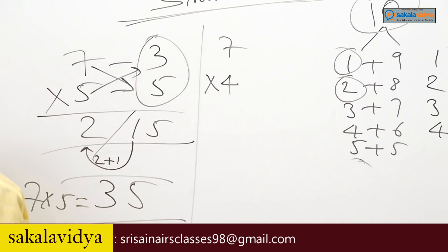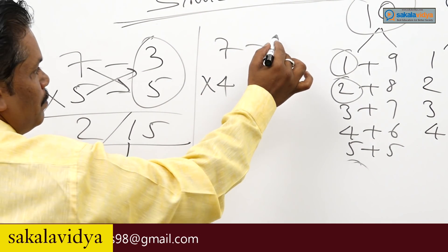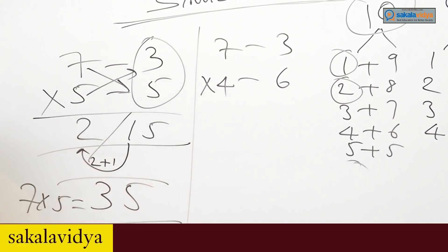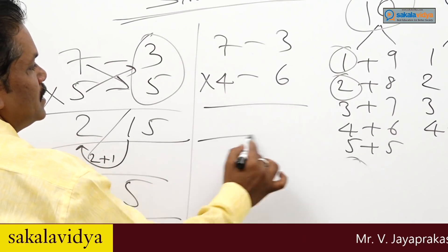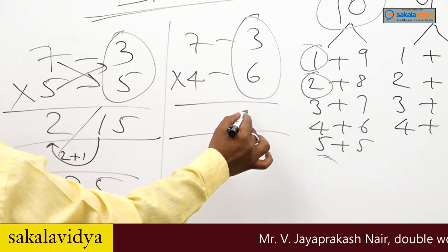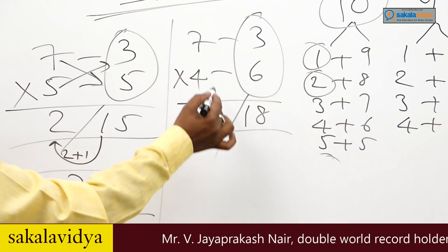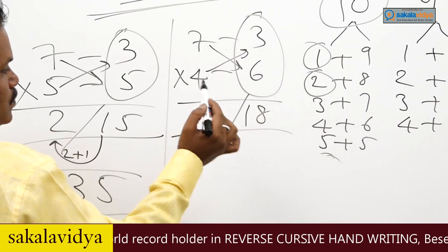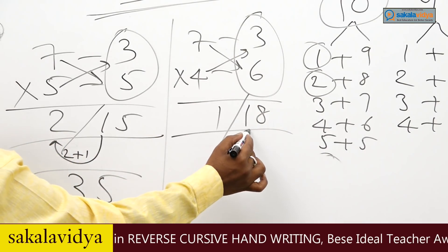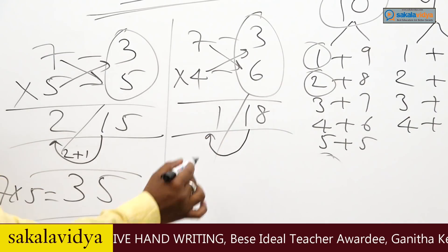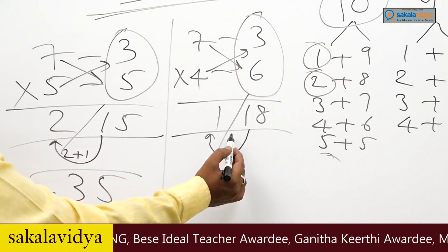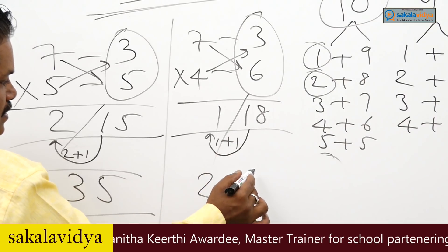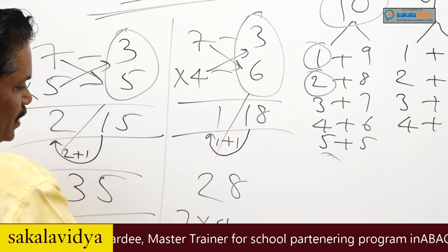7 into 4: complement of 7 is 3 and complement of 4 is 6. 3 into 6 is 18. 7 minus 6 is 1, or 4 minus 3 is 1. Adding the carry: 1 plus 1 is 2. So 7 into 4 is 28.